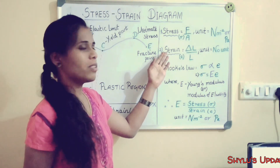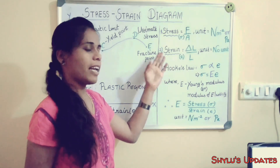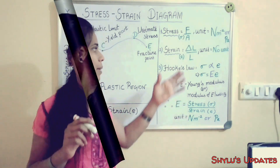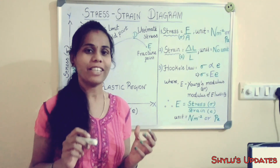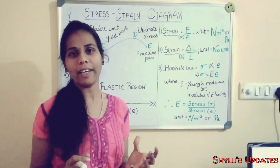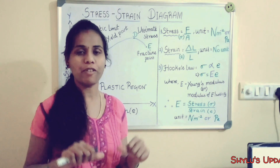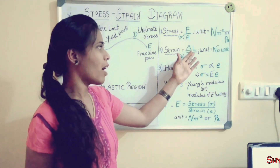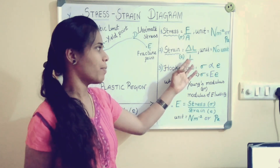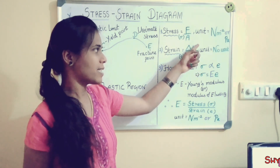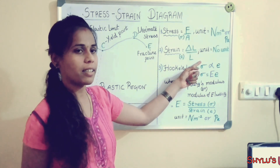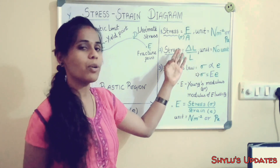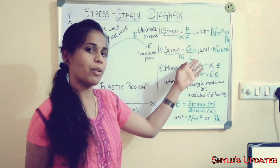Now we can see about strain. Strain means change in length divided by original length. Strain means relative change in the size or shape of the body due to externally applied forces. The formula is δL divided by L, which means extension divided by original length. Strain has no unit because it is dimensionless.